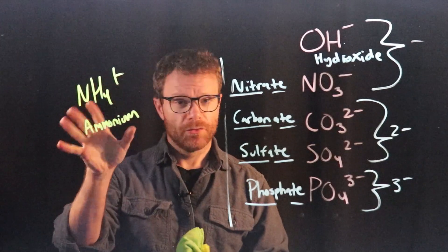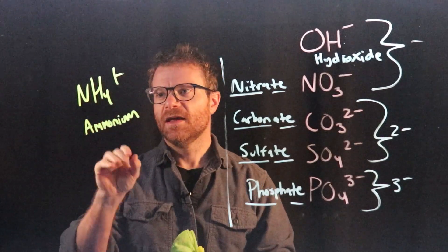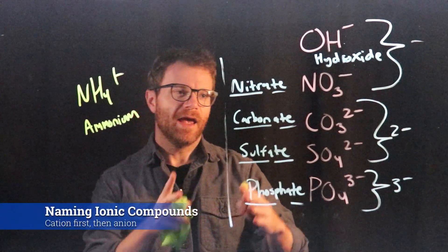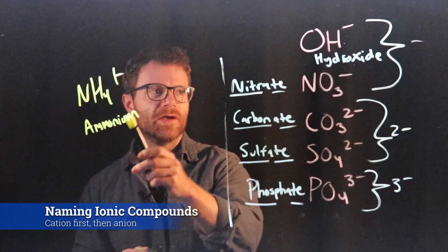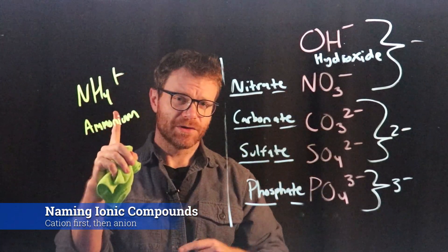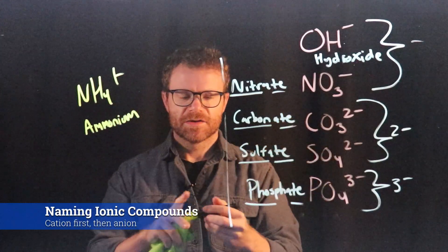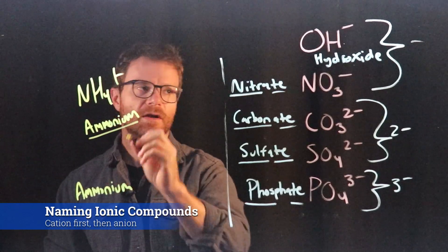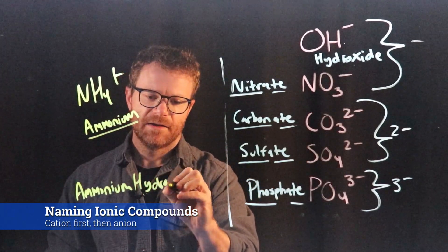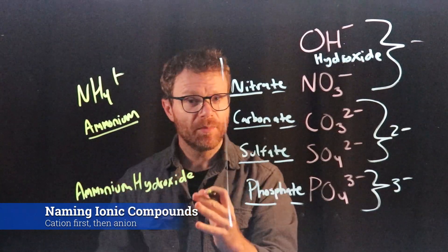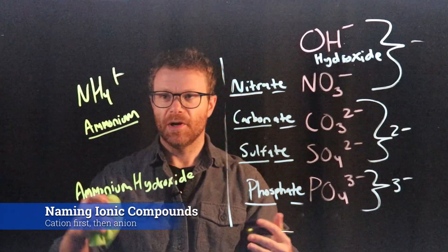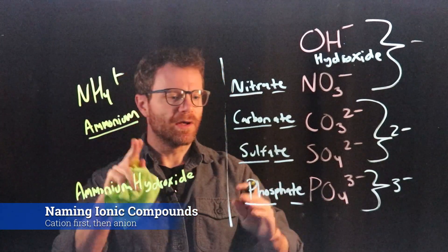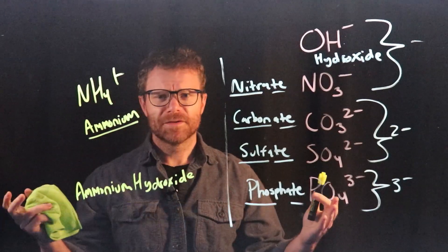And you'll recall from basic ionic bonding that cations, positively charged ions, go first in the name and the anions go second. So if I had ammonium bonded with hydroxide, ammonium's got a plus one charge, hydroxide's got a negative one charge. So ammonium would go first in the name, ammonium, and we write it out just as we would here. And then we put hydroxide. And that would be the name of this compound. If we had ammonium and phosphate bonded together, we would need three ammoniums to every one phosphate. We'll talk about that in a later video. We would call that ammonium phosphate. And it's just that easy.